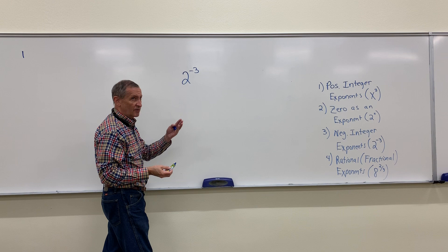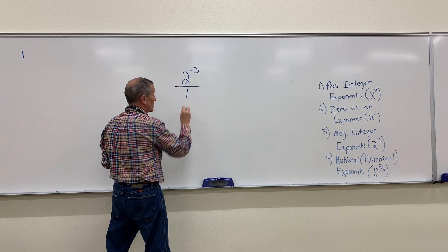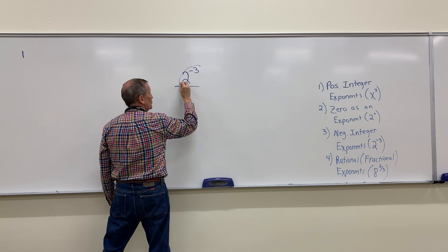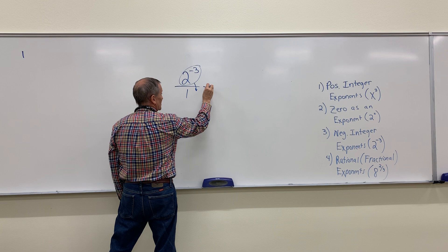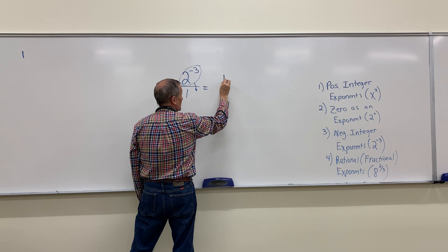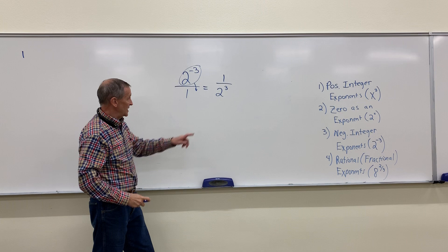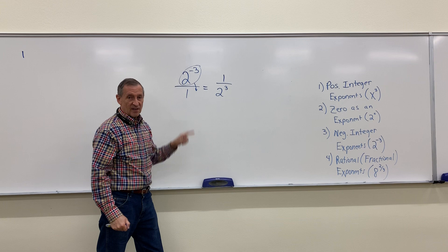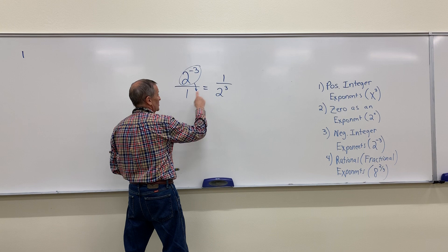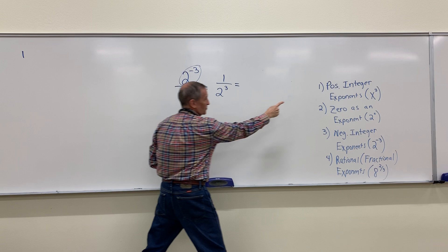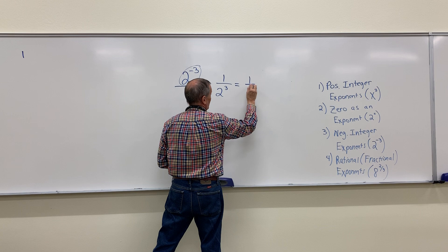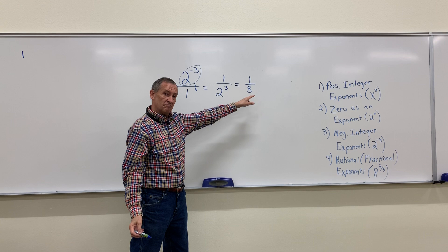Here's how you can think of it: if I have something to a negative power, I can move it to the other part of the fraction and change the sign of my exponent. You always have a fraction — if you don't have one, make one. So two to the negative three over one becomes one over two to the positive three. I can then evaluate two to the positive three: that's two times two times two, giving me one over eight. Two to the negative three is not a negative number — it turns out to be a fraction.